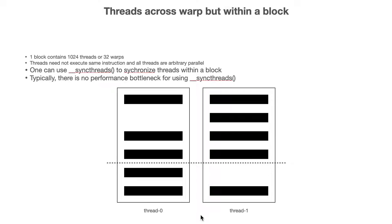One can use syncthreads to synchronize threads within the block. Typically, there is no performance bottleneck from using syncthreads. In this scenario, instructions across the two threads can be arbitrarily different and parallel, but you may want that before executing a particular instruction, thread one and thread zero should each complete their respective prior instructions. For that, you can introduce a barrier, which tells both threads to stop until the other has reached that point. So if thread zero arrives first, it waits until thread one reaches the barrier, and then both threads move forward together.